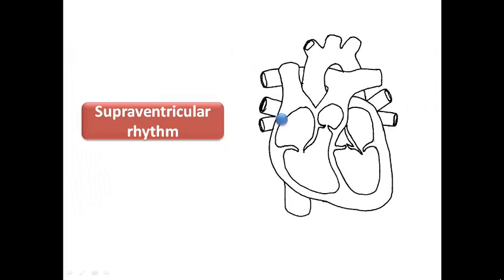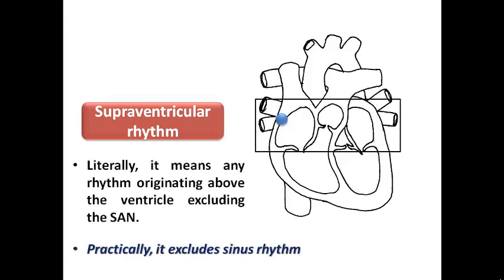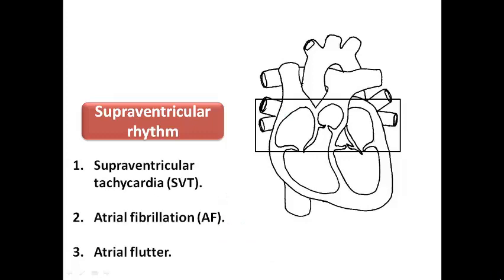Supraventricular rhythm means any rhythm originating above the ventricles, excluding the SA node. Practically, the word supraventricular rhythm excludes sinus rhythm. Forms of supraventricular rhythm include supraventricular tachycardia (SVT), atrial fibrillation, and atrial flutter. Atrial fibrillation and atrial flutter are specific different entities from SVT, so please don't call AF or flutter as supraventricular tachycardia, even if they are tachycardic and supraventricular — SVT is a different entity.